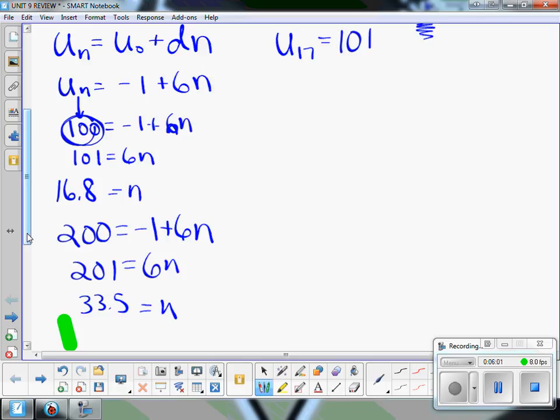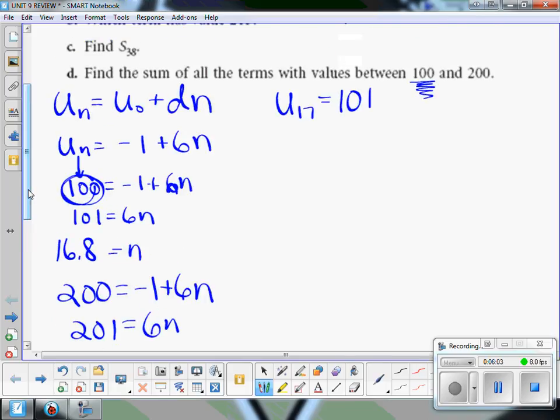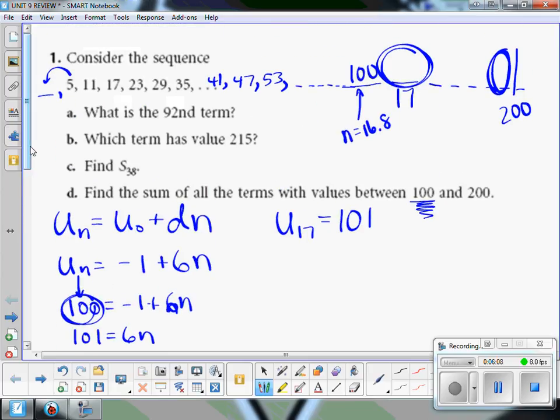Well, 200 can't be the 33.5 term. So if you're thinking about it, there's some thinking involved. You have to put some pieces of the puzzle together here. If the 33.5 term was 200, what term number would be the last one before that? The 33rd. So now I need to know what the 33rd term is, and that came out to be 197.